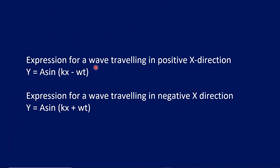The expression for a wave traveling in the positive x direction is y equals a sin(kx minus omega t). The expression y2 represents the displacement of the reflected wave.